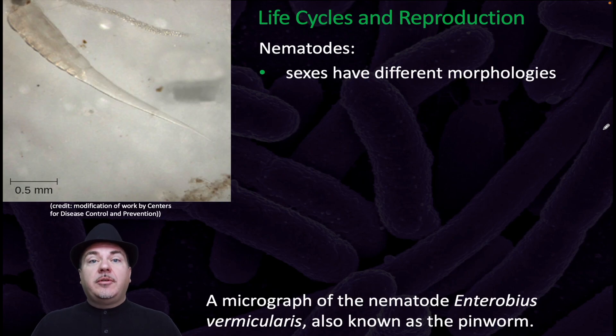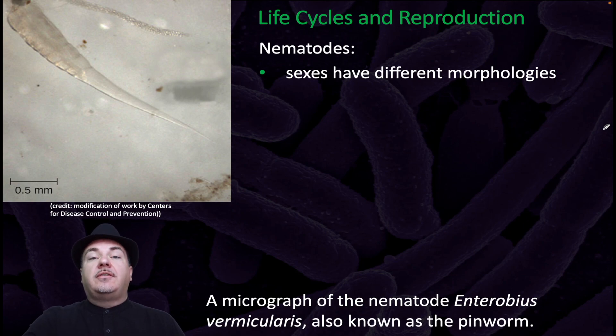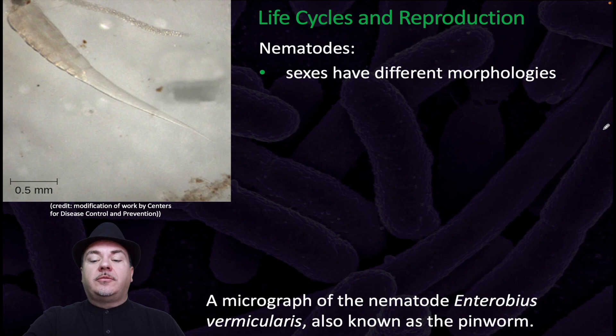In the nematodes, which are roundworms, we have sexes with different morphologies. Here's an example of a nematode, a roundworm — this is known as a pinworm.